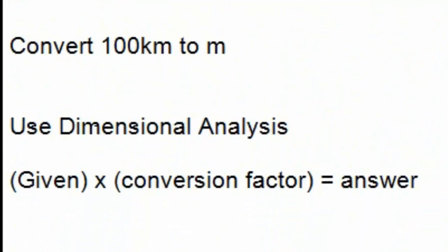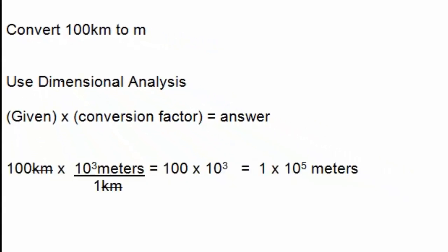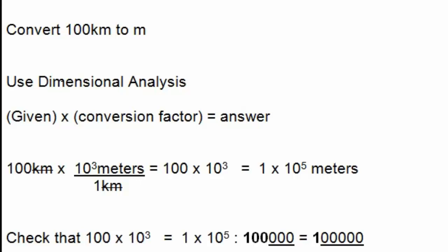Now let's carry out the conversion for 100 kilometers to meters using dimensional analysis. The framework is: the given information — 100 kilometers — times a conversion factor. We set up the conversion factor as 10³ meters over one kilometer so the units of kilometers cancel. We end up with 100 times 10³ meters. Converting to scientific notation, that's 1 times 10⁵ meters. We can check: 100 has 2 zeros, and 10³ contributes 3 more zeros, giving 5 zeros total — consistent with 1 times 10⁵.